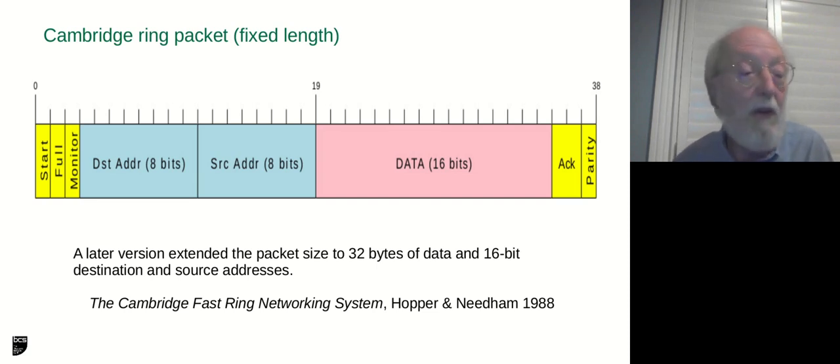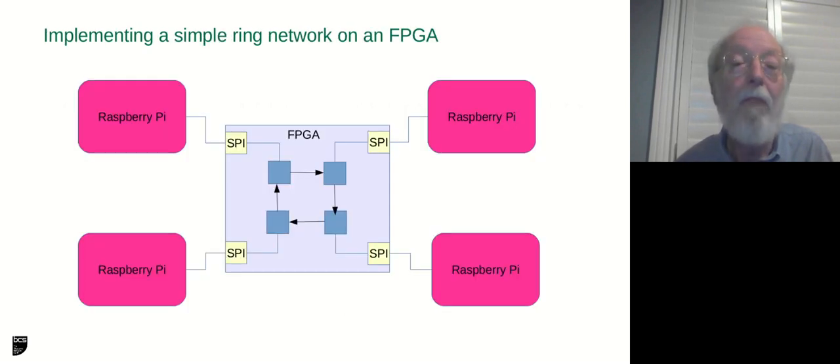So, compared to the very complicated TCP IP header, a Cambridge ring packet just has... Well, it's a fixed length packet of 38 bits, 16 bits of data, source and destination address, 8 bits each. So, you can address up to 256 computers on the ring. And, of course, if you want more, you just make a ring of rings, and then a few bits of control, empty and full bits, and then acknowledge and one bit of parity.